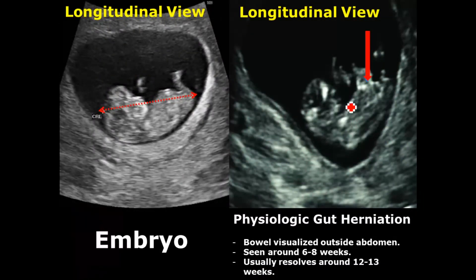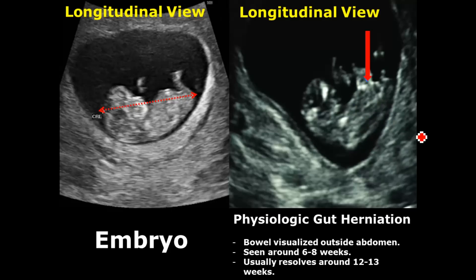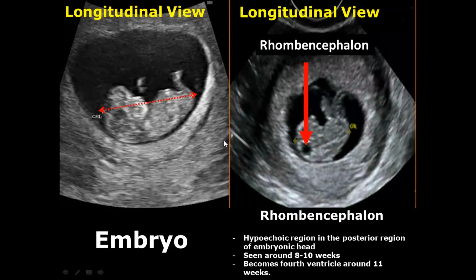It is a normal occurrence in the first trimester that around 6 to 8 weeks there is bulging of the intestines of the embryo. This is because the bowel is growing much faster than the abdominal cavity, but by 12 to 13 weeks it will return to its normal appearance. Another normal occurrence in the first trimester is the rhombencephalon, seen around 8 to 10 weeks as a hypoechoic region in the posterior part of the embryonic head. It becomes the fourth ventricle by 11 weeks.